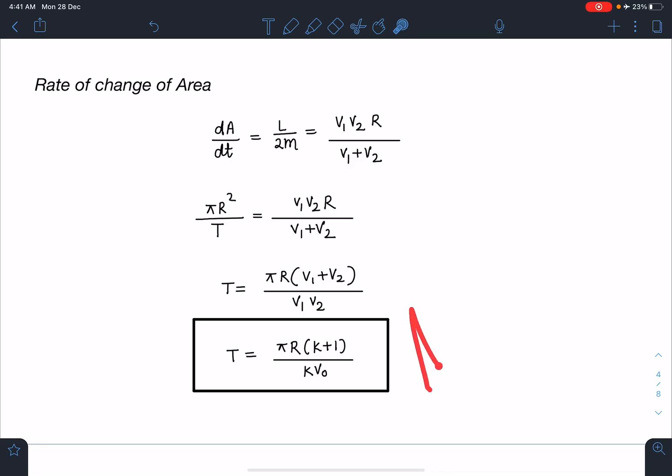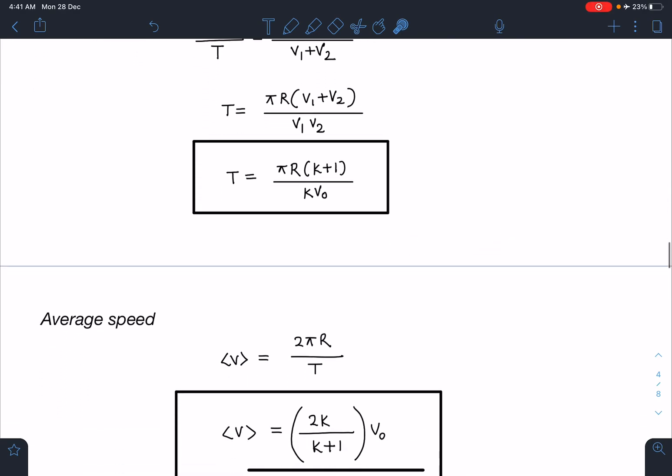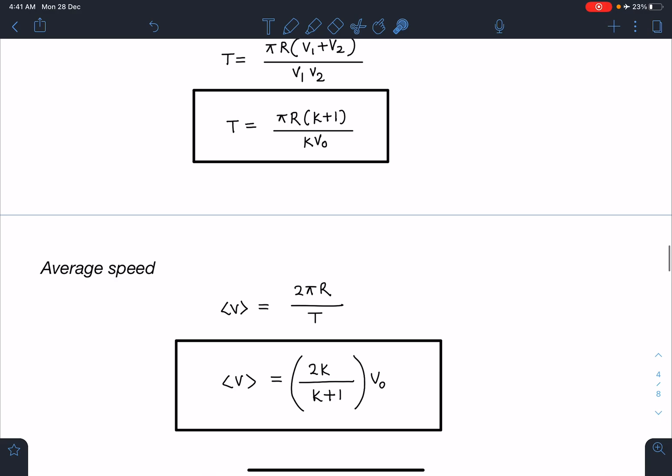Now it's a very simple last part: average speed. It is going to be total distance by total time in one rotation. So total distance is 2πr divided by time T. Average speed I am going to get as 2k/(k plus 1) times v₀. This is going to be the final answer.